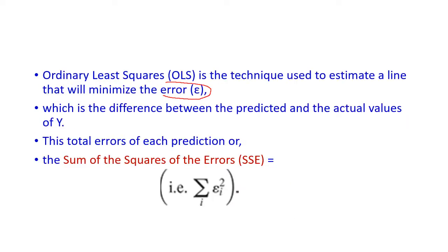Our aim is to minimize the error. For that, we use the OLS (ordinary least squares) algorithm, which is used to estimate the regression line and minimize the error. Maximum data points lie on the regression line, but some lie below and some above, and the difference between those points is called the error.